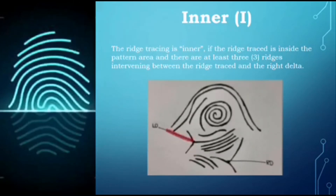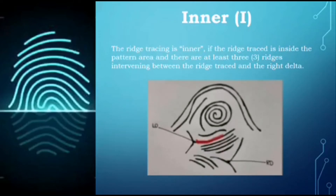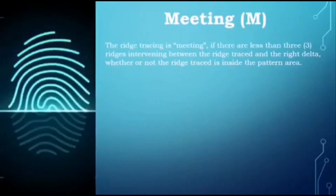Here is an illustration of inner — this is the left delta and this is the right delta. The rule states that ridge tracing should always begin from the left delta and end at the right delta. This tracing ridge contains at least three or more ridges between the ridge trace and the right delta. In this illustration there are four ridges, and the tracing ridge goes above or inside the right delta.